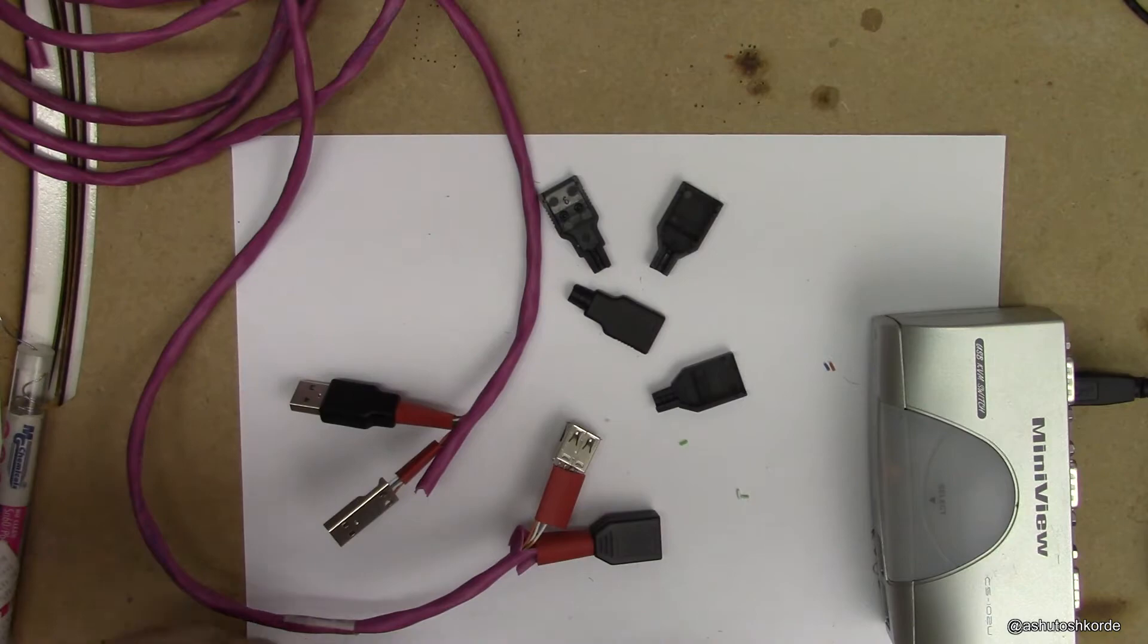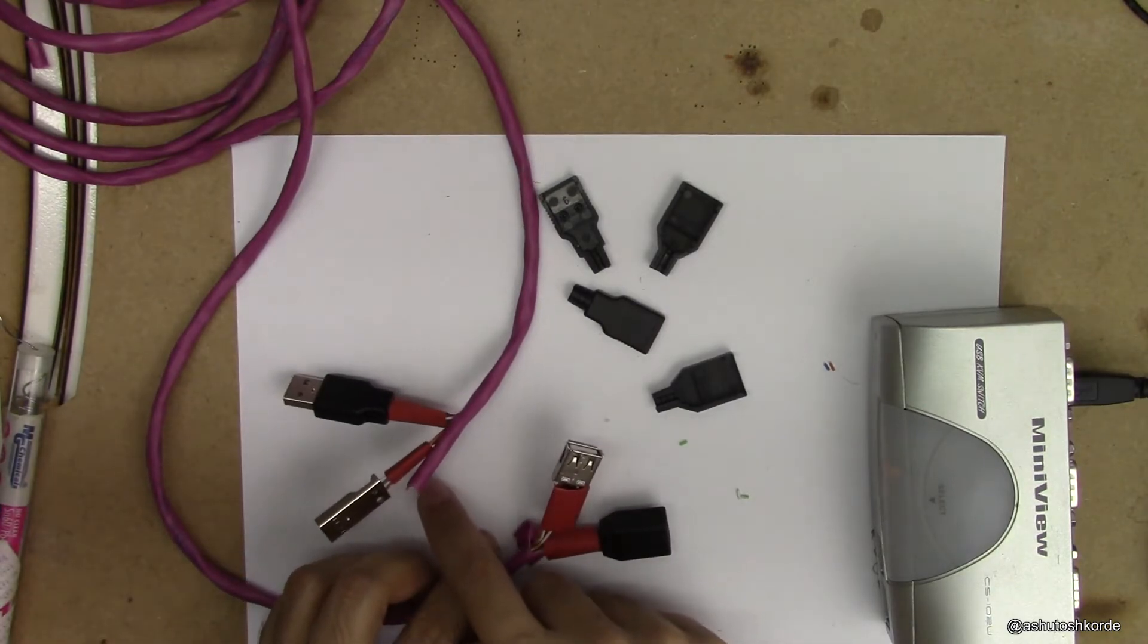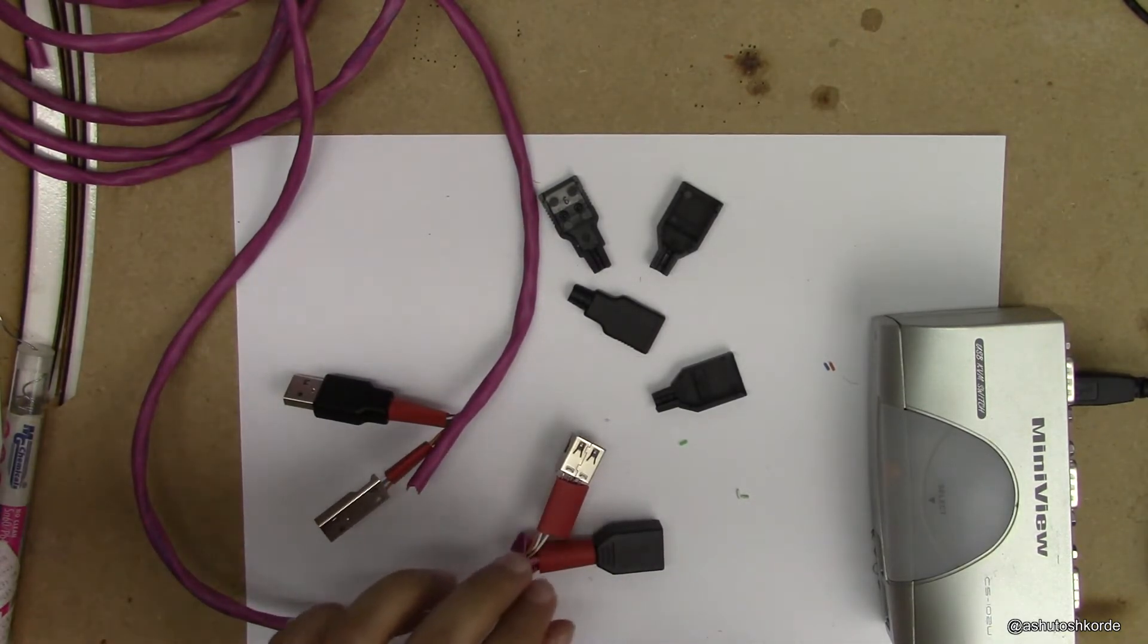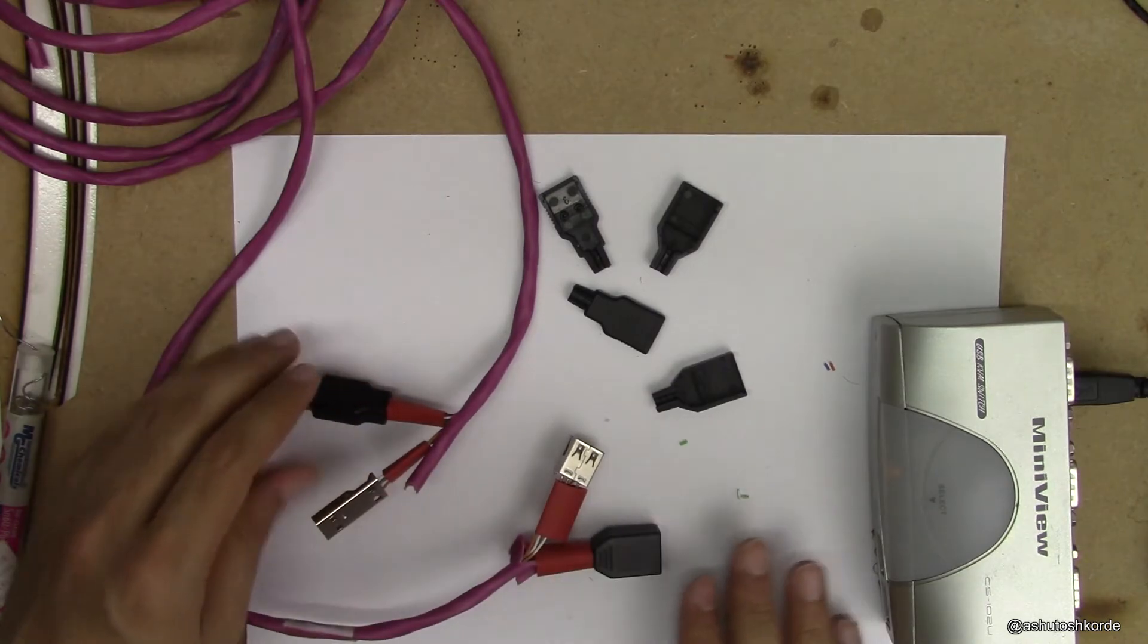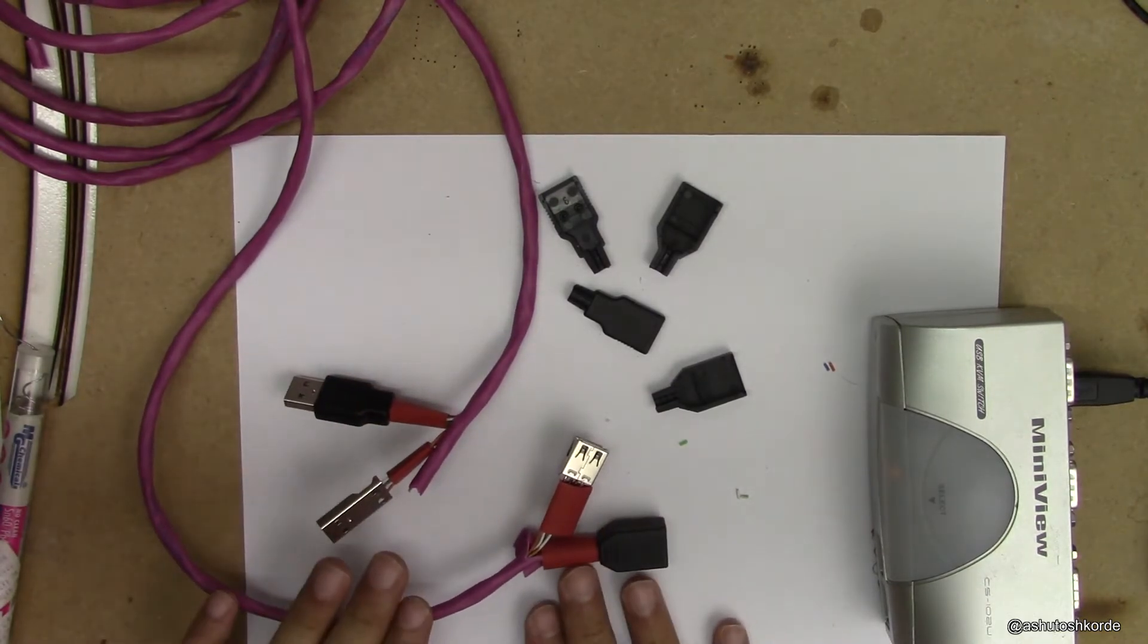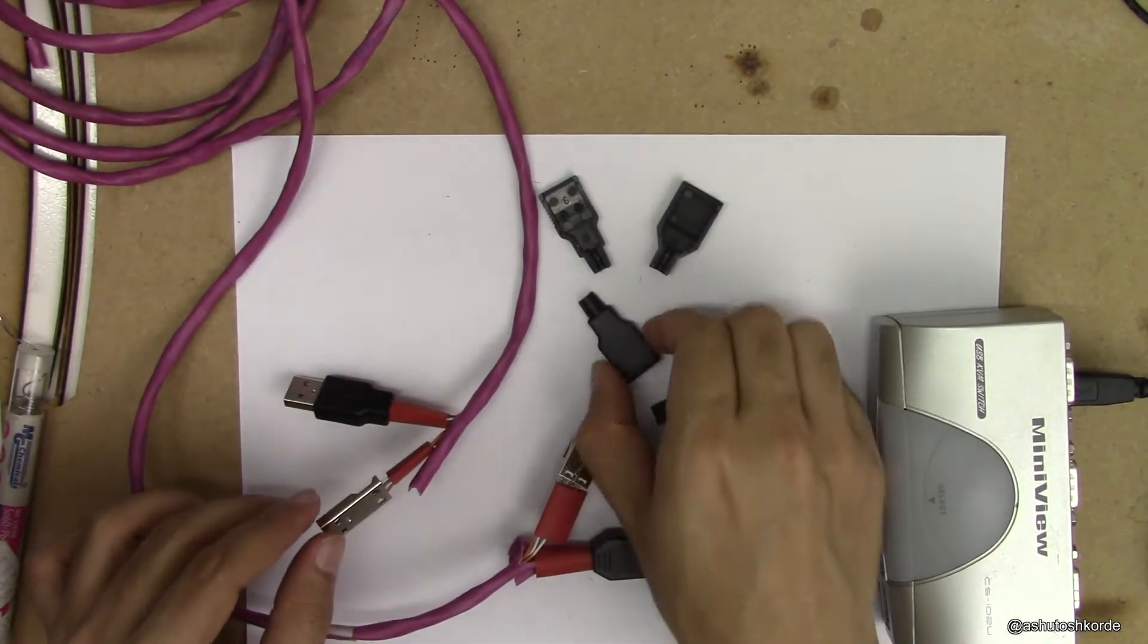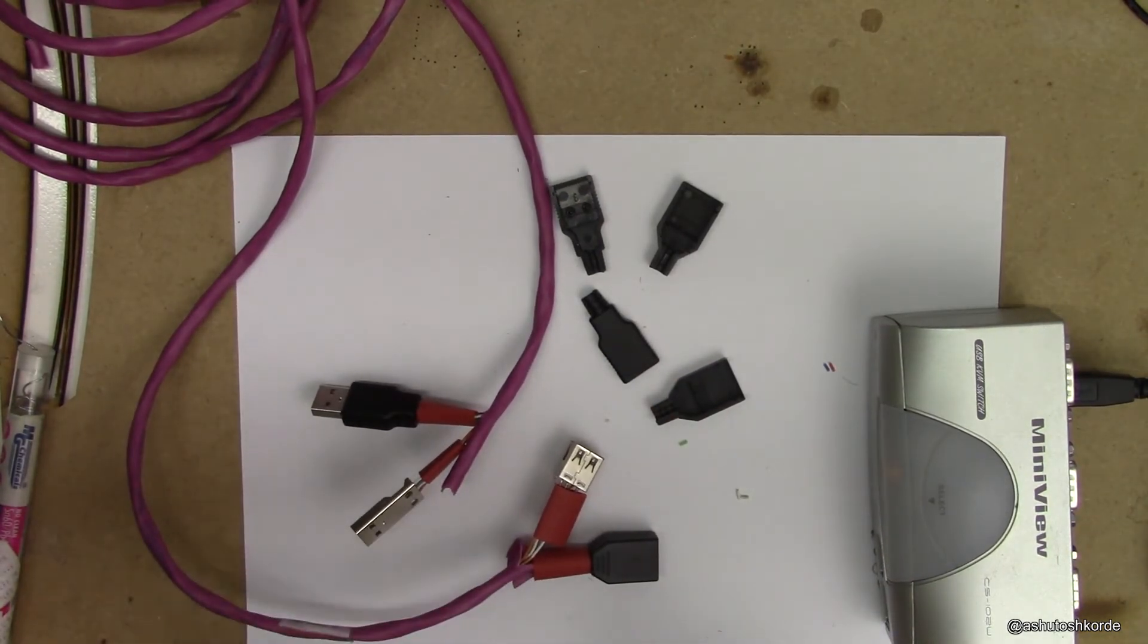So now I've completed soldering both the sides of the connectors. I'm going to do a quick sanity test to see if both these connectors work, and if they do, I'm just going to put on these covers and shrink these tubes.